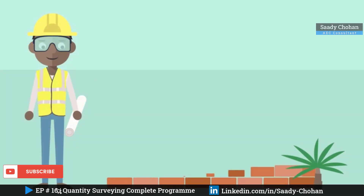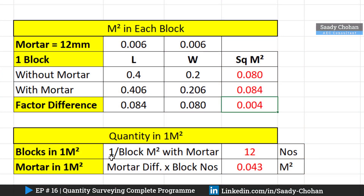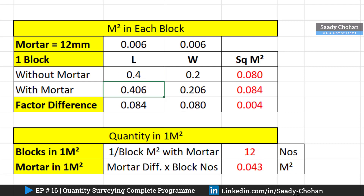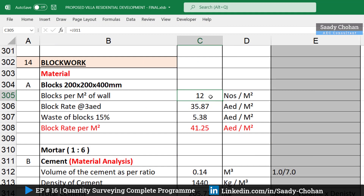With these values it's easy to find how many blocks we need per square meter. In one square meter: one divided by block area with mortar gives 12 blocks required. For required mortar per square meter, multiply the number of blocks by the factor difference. If you change the block size — say 0.2 instead of 0.4 — you can see it becomes 24 blocks. This calculation sheet helps you find the exact number; there's always logic behind it.